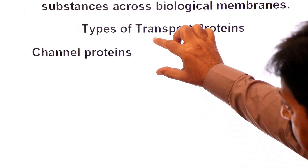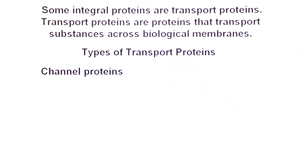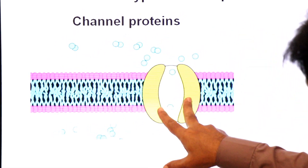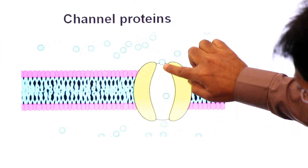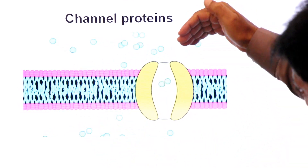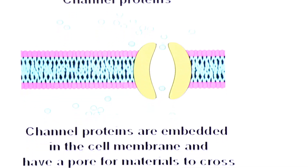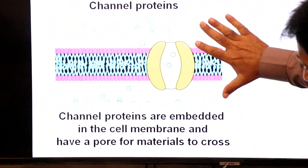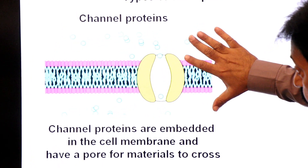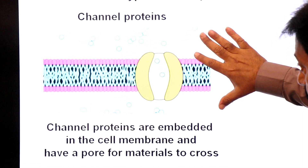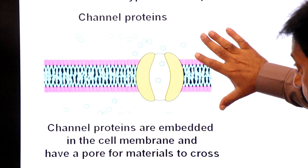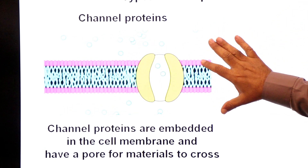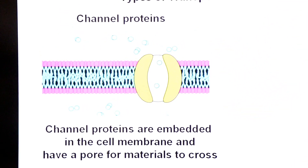Channel proteins create a channel or pore in the plasma membrane. Channel proteins are embedded in the cell membrane and have a pore through which material can cross. For glucose transport, a channel protein for glucose is used; for sodium, a channel protein for sodium; for potassium, a channel protein for potassium. Different solutes require different channel proteins.